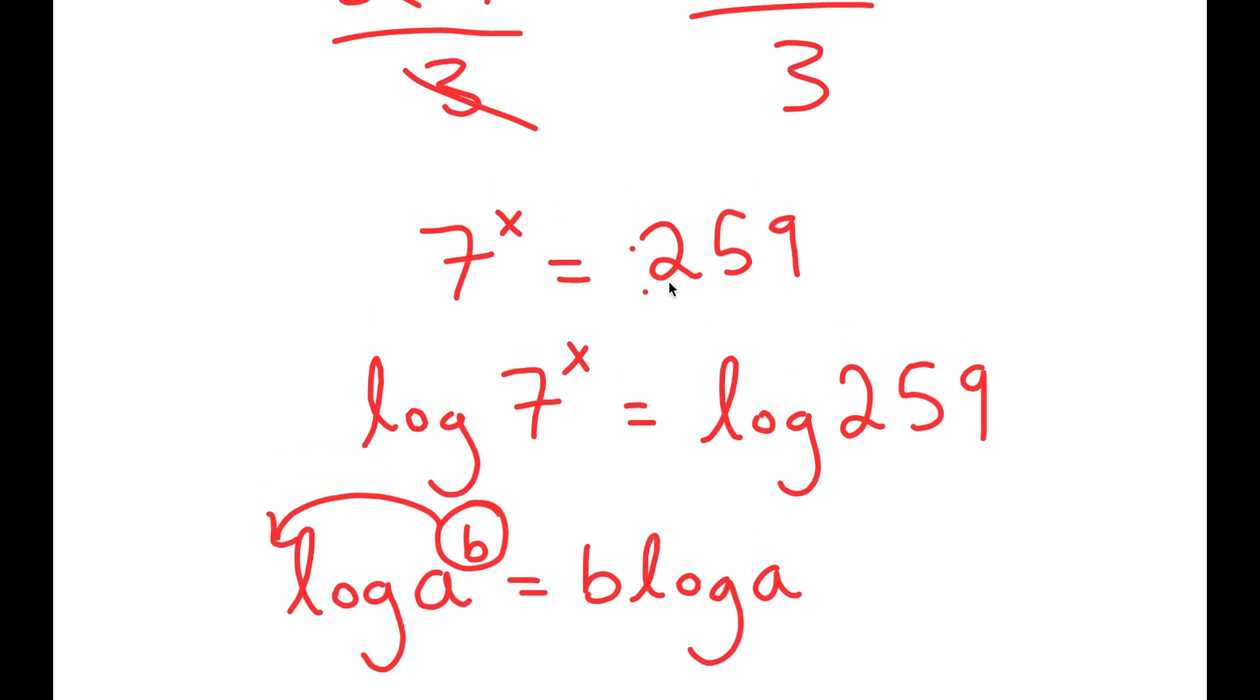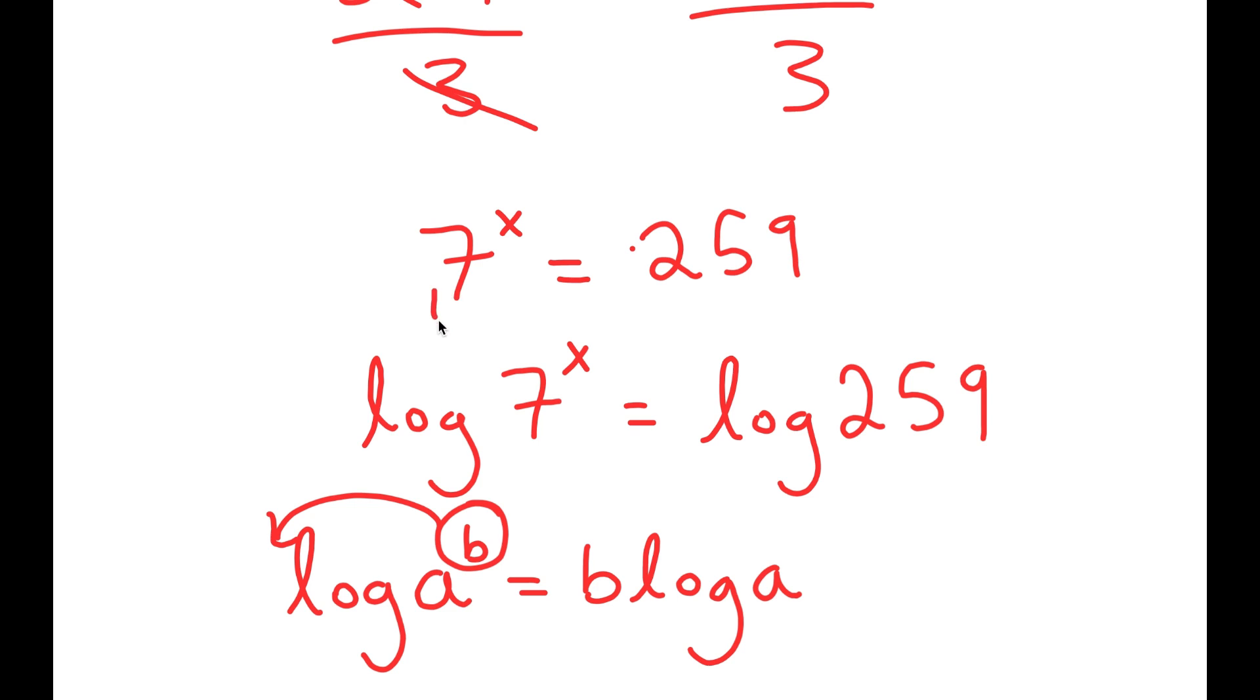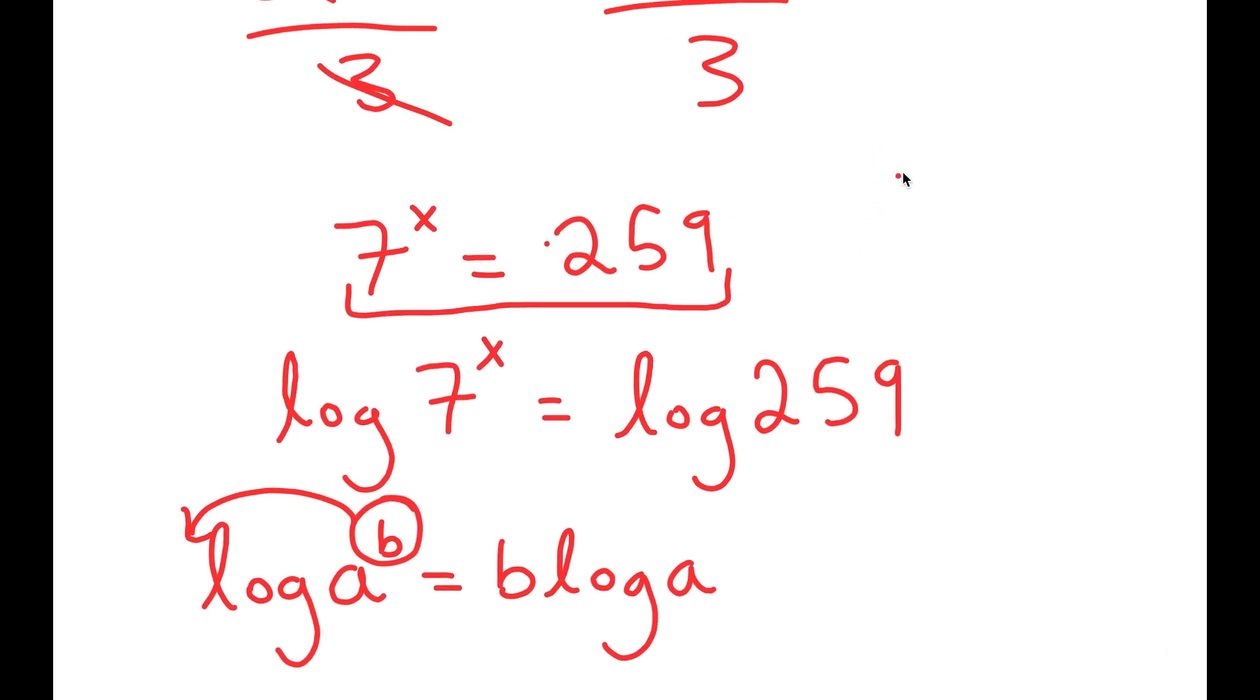And the reason this property is so useful is because right now, as it is 7 to the power of x equals 259, well, 7 to the power of 1 is 7, 7 to the power of 2 is 49, and 7 to the power of 3 is 343. So x is going to be somewhere in between 2 and 3, but we don't know the exact value of x, and we can't solve for it as an exponent.